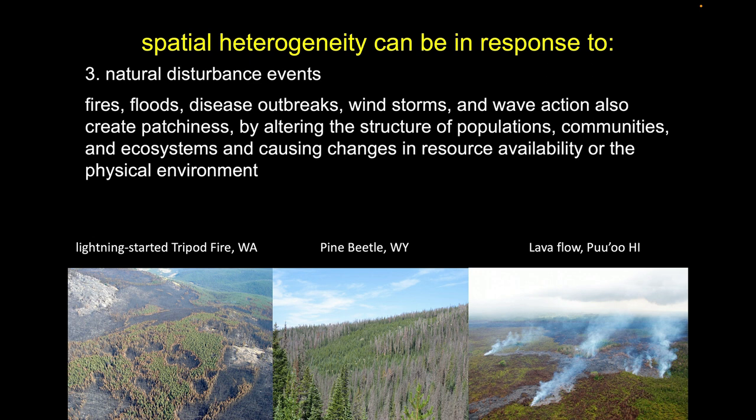With climate change, we've changed the average temperature — in particular, we've reduced the duration and frequency of cold snaps in winter, making winters warmer. What that's done is taken an insect that typically completes one life cycle per year and allowed it to complete two or sometimes three life cycles in a given year.